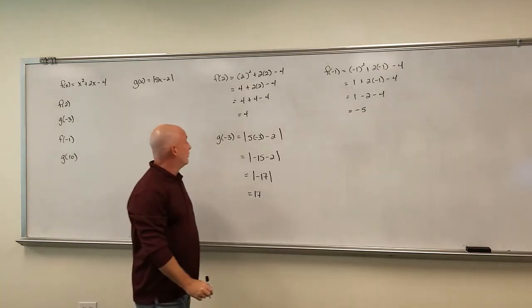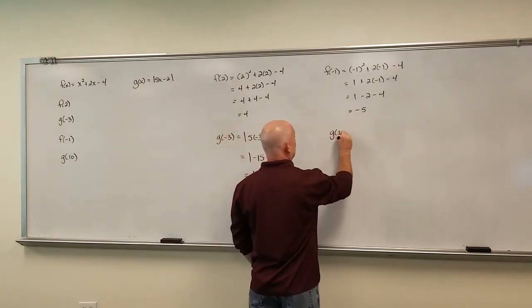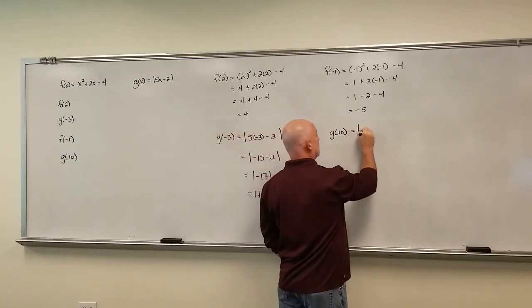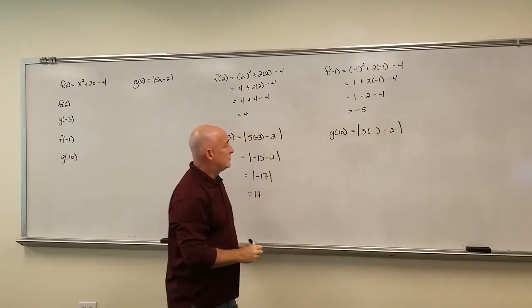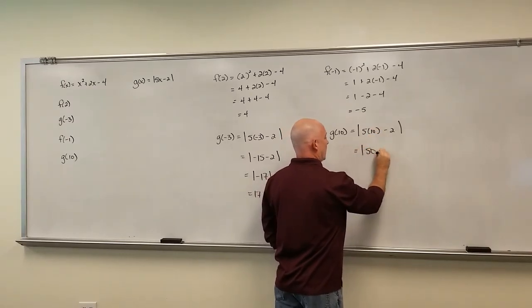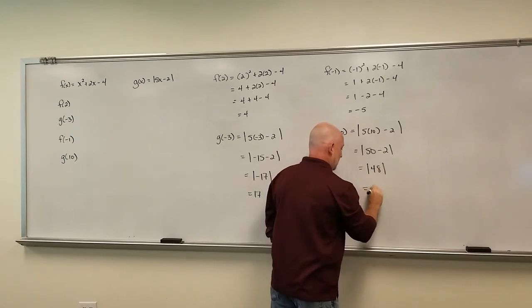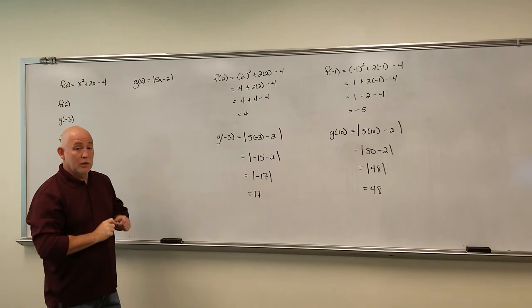All right, so hopefully you're doing pretty good. Let's try our last one I asked you to do. g(10). Go into the function name g, 5x - 2, and plug in a 10. So when we plug in a 10 here, I guess that's a lawnmower that y'all hear right now. Do your order of operations, and there you go. We get 48.